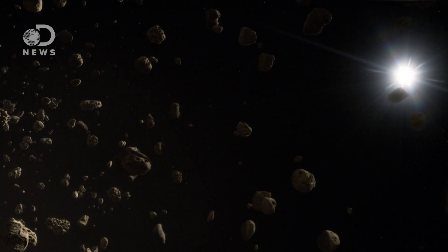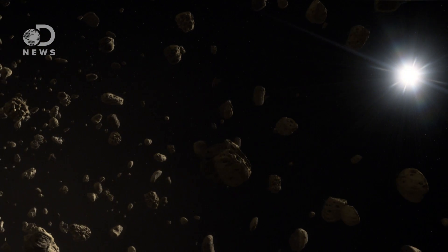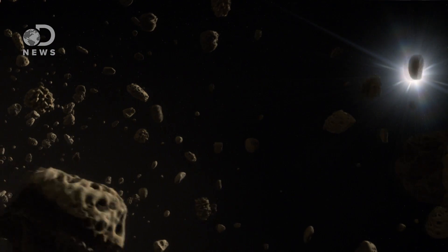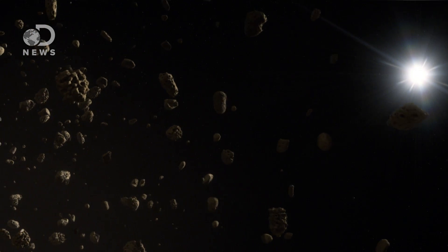Meteoroids the size of sand grains and smaller enter our atmosphere every day by the truckload. NASA estimates 100 tons of dust hits us every single day. But they're so small they don't have enough momentum to keep up their speed when they hit the air. Instead, they slow down and make it all the way to Earth.